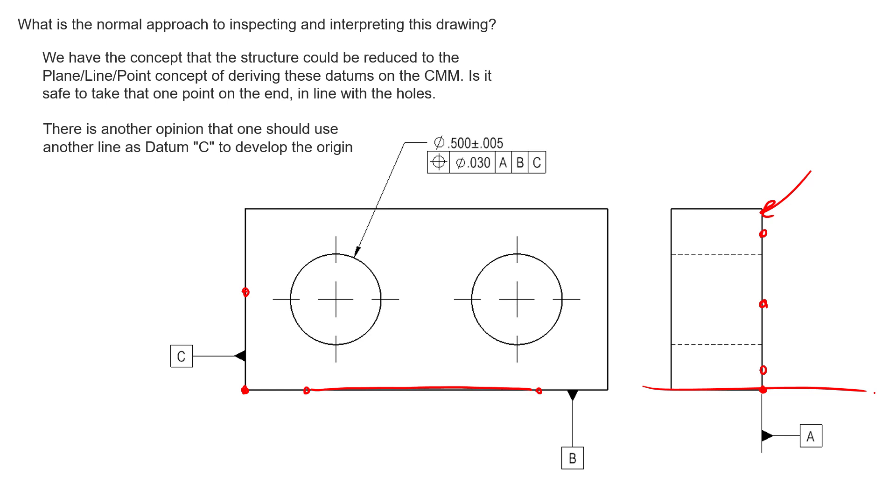When there's orientation error between perhaps datum B and datum A, if there's any orientation or form error between datum feature A and datum feature B, we see that we're taking that into account. If we take two points here and we zero everything off of there, we're zeroing off of this point.